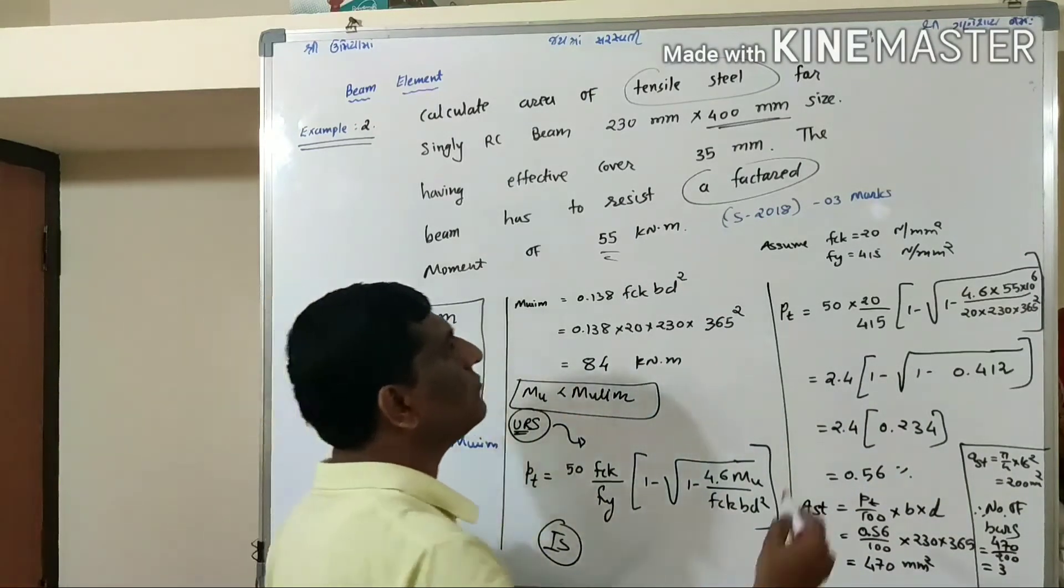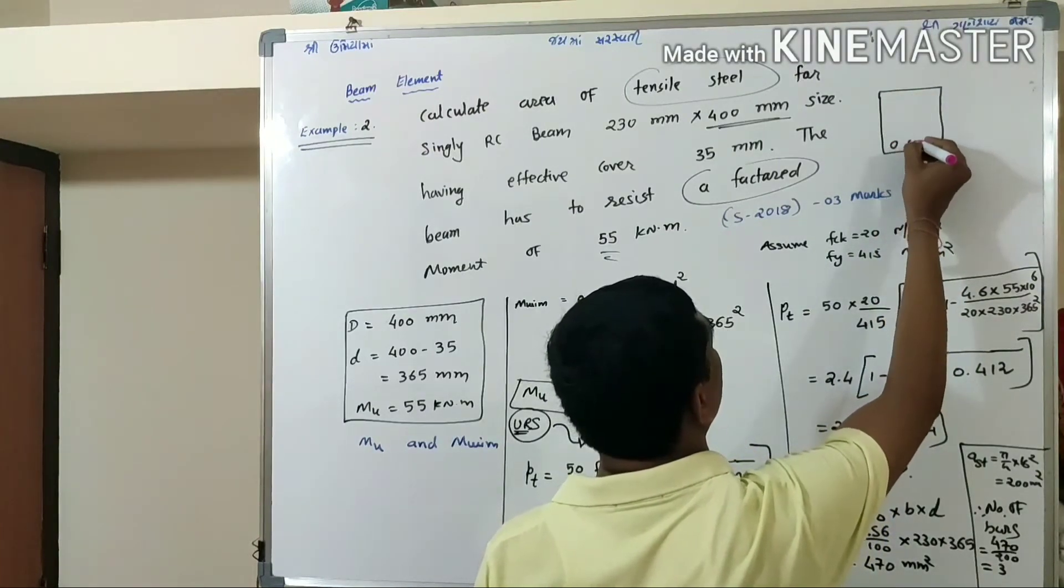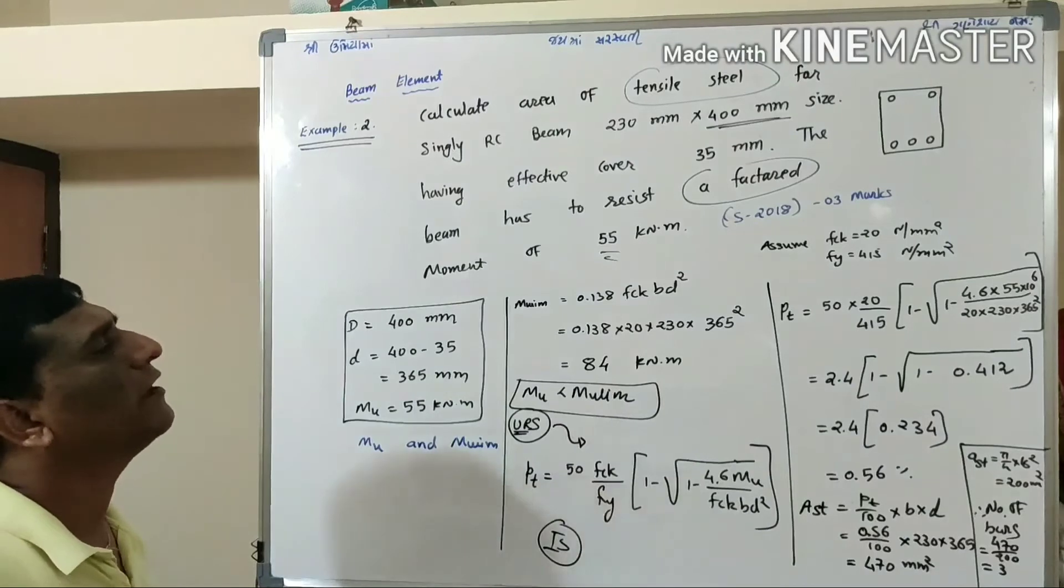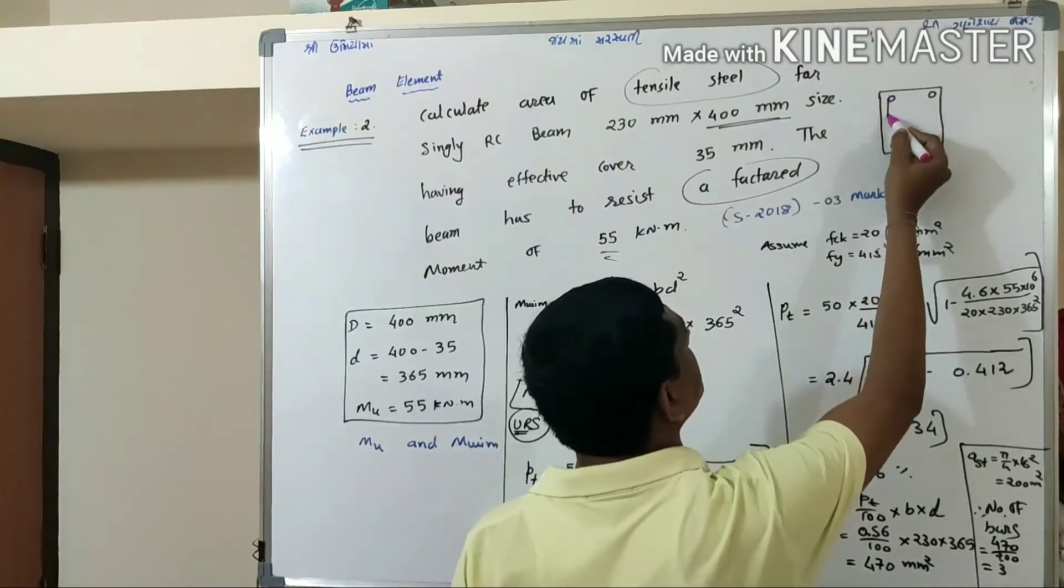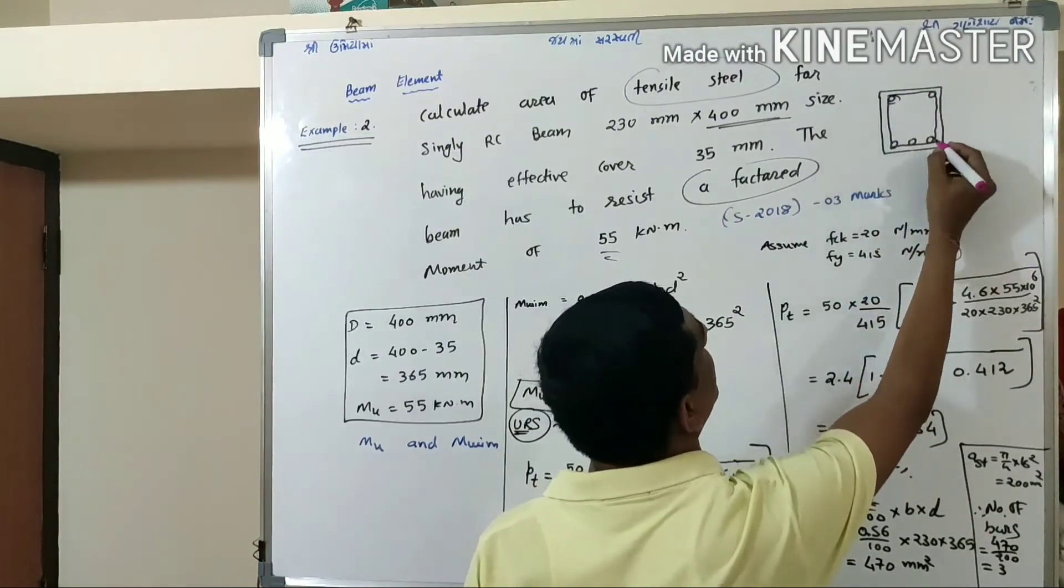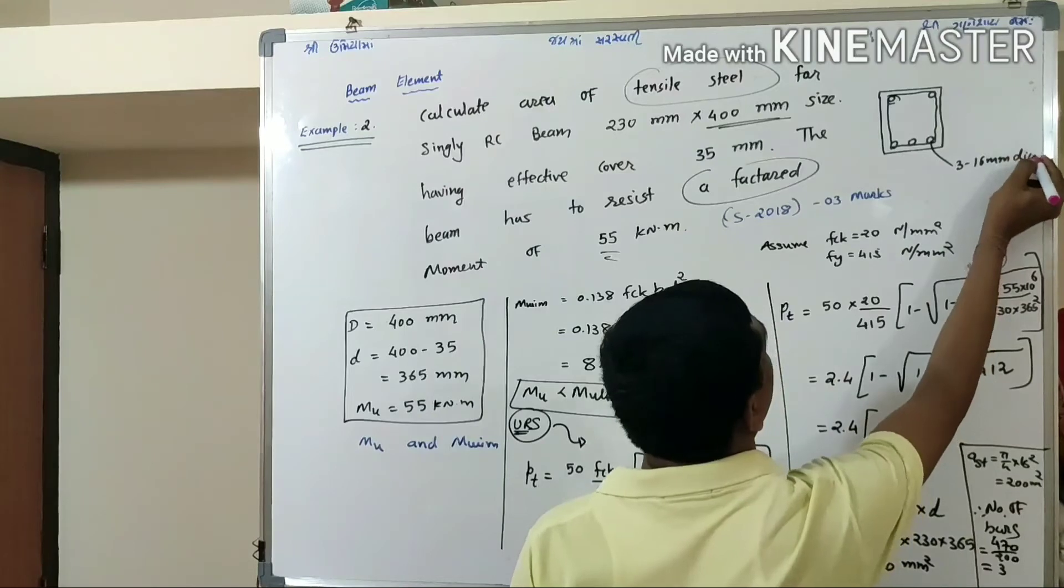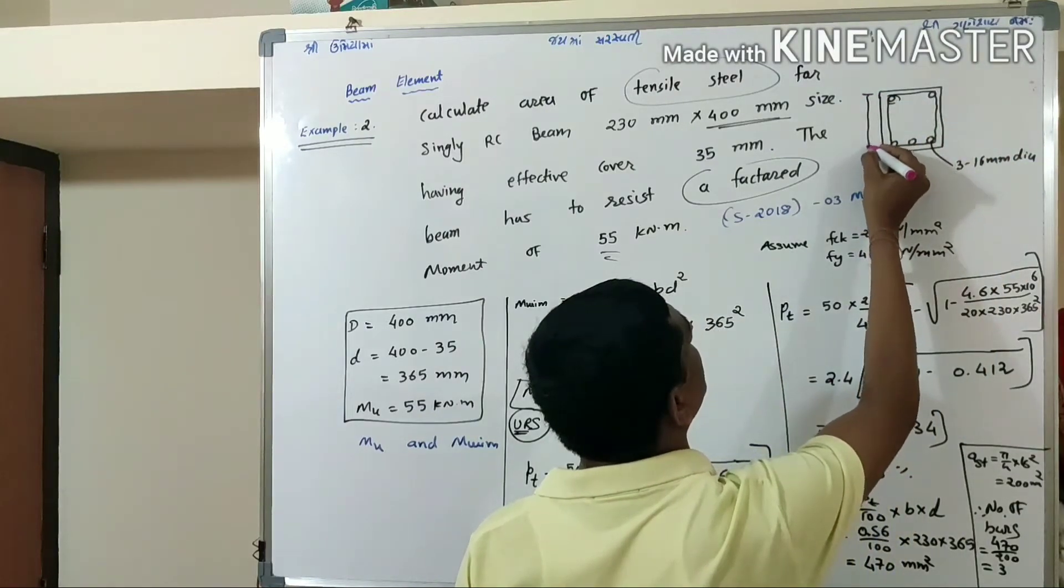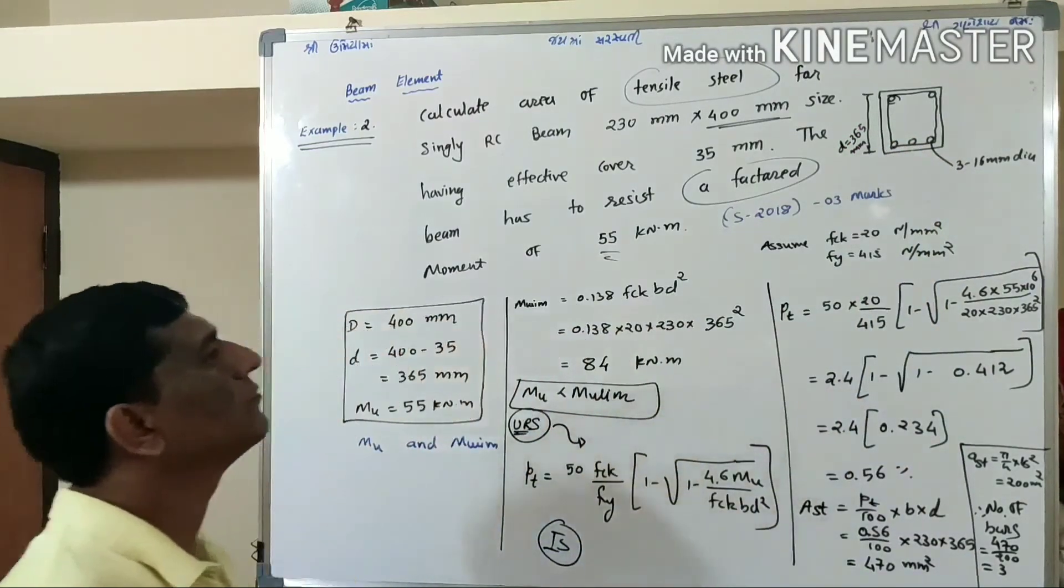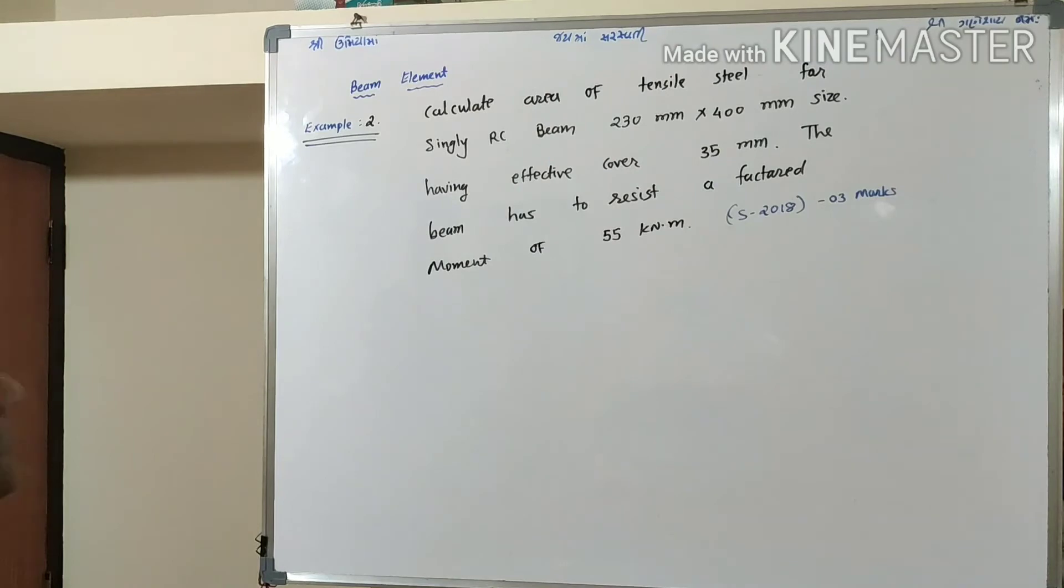So at the end you have to draw one figure, the cross section of the beam. Here total three number of bars. As it is singly RC beam, you have to provide tensile bars. This bar is three number 16 mm diameter. And your small d is 365 mm. This is the answer for the required example. Ready? Thank you. Next example.